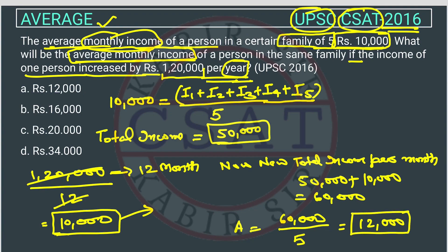So 12,000 is our answer. Option A is our answer. This was a very easy question. I hope you got the answer. If you still have some problem, you can comment, call us, or WhatsApp us.